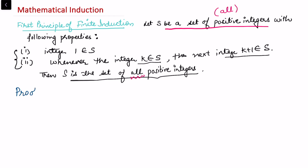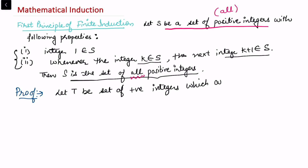Now let us see the proof of this statement. For the proof I will be using the Well-Ordering Principle, which I covered in my last video. Let T be the set of positive integers which are not in S.